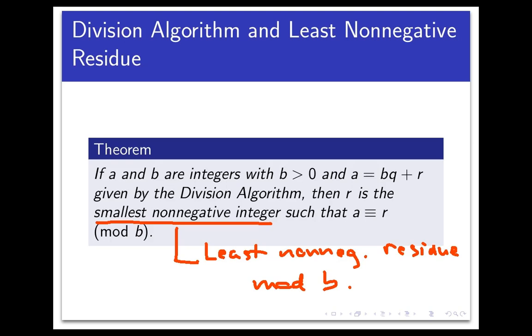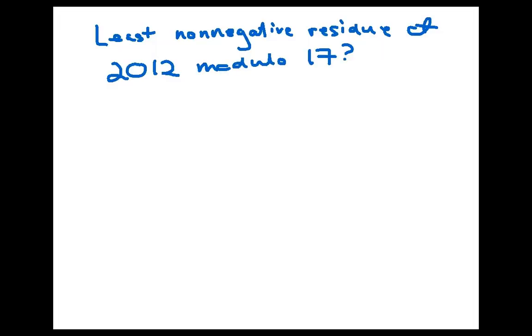Now the reason we care about the least non-negative residue of an integer modulo something else is that oftentimes we want to reduce an integer down to its quote-unquote lowest form and this number is what we are after. Here's a quick example and in the next video we'll give a bigger example that has an applied flavor to it. So what's the least non-negative residue of 2012 mod 17? That is of all the numbers that are congruent to 2012 modulo 17, which one is the smallest one that stays out of the negative number territory?